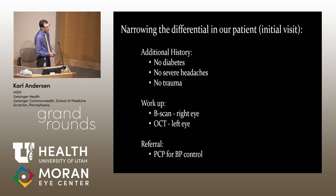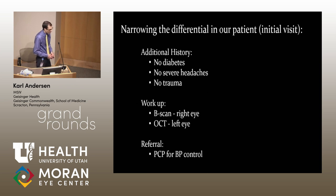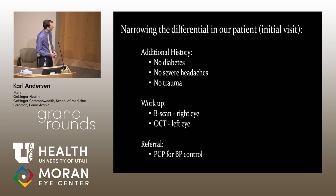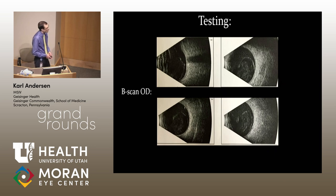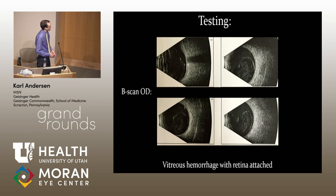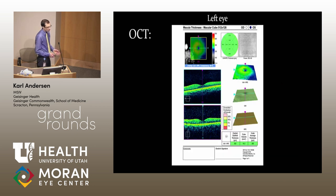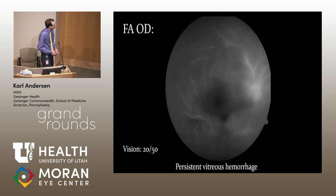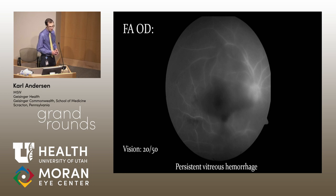Narrowing down his differential: he didn't have diabetes, he didn't have any severe headaches, and he had no trauma — that rules out several causes. A B-scan was done in his right eye because there was not a good view on OCT. He was referred to a PCP for blood pressure control. His B-scan showed vitreous heme without any detachment, and his OCT was unremarkable in the left eye.